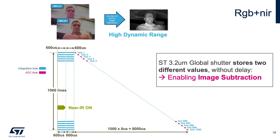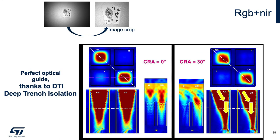We have storage built into every pixel. The global shutter will store two different values, therefore enabling image subtraction and also enabling the high dynamic range functionality.